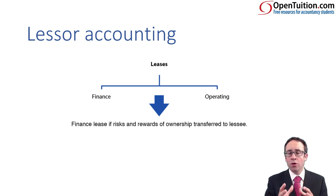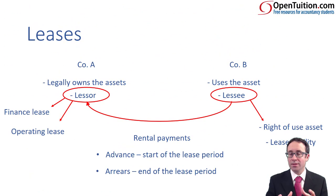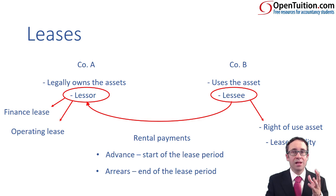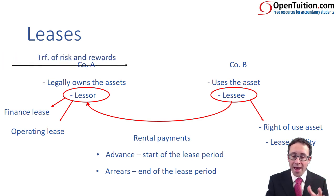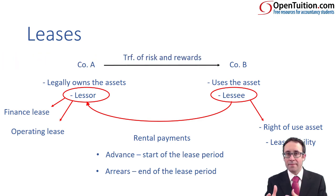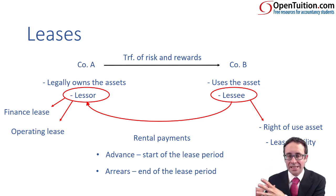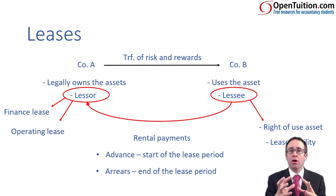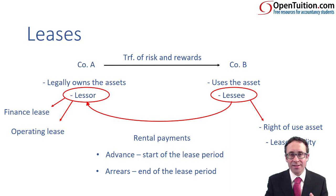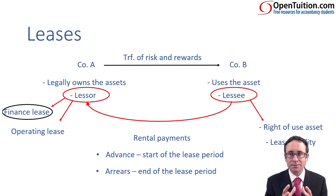If those rewards are transferred to the lessee — let's go back to our diagram — those rewards are transferred to the lessee, going from company A to company B. The risks and rewards are moving to the lessee, company B. We as company A, the lessor, no longer have any of the risks or any of the rewards. If that's the case, then the lease is a finance lease.